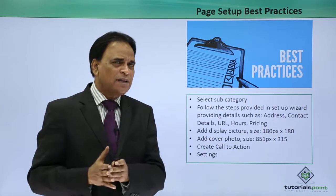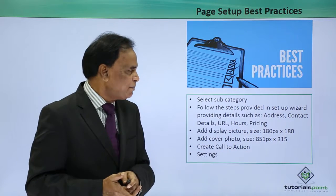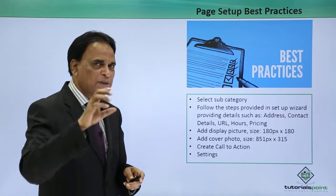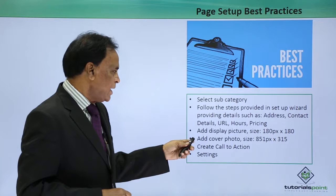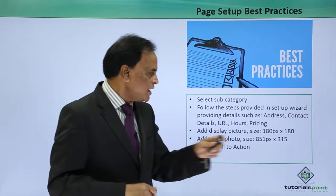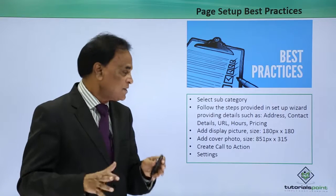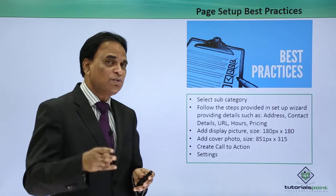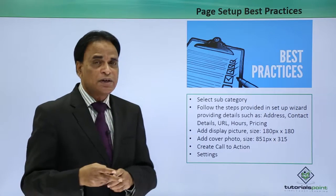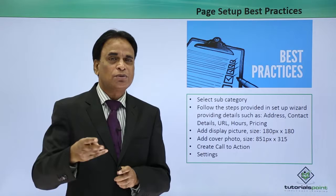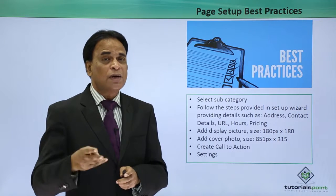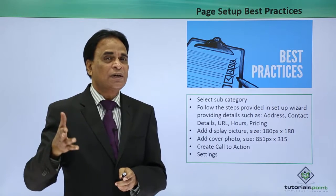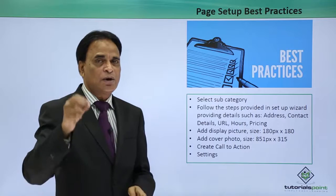For your display picture, the standard practice size is 180 pixels by 180 pixels — that is the standard display picture size that should be on the Facebook banner. For the cover photo, it should be 851 pixels by 315 pixels — that is the best size. Besides these two, the most important thing is to create a call to action. A call to action is extremely important to drive traffic to your website or landing page from Facebook. Never forget to create a call to action button.